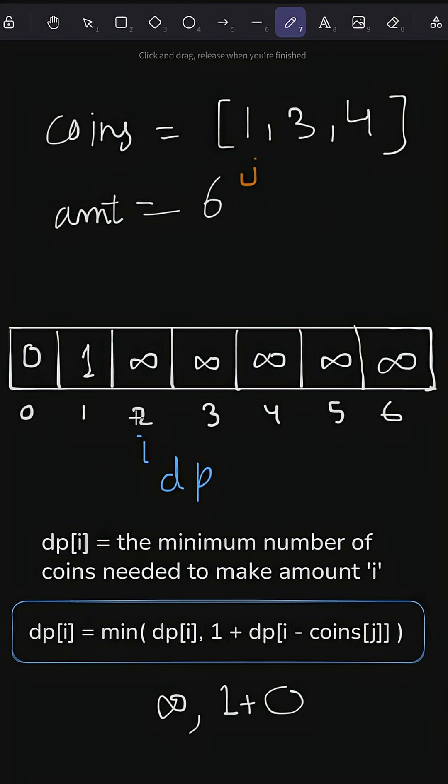Then for amount 2, we do the same operations until we reach our desired amount. That will be the final answer. After executing this operation on all of these elements, the answer that we get is 2, which is the correct one.